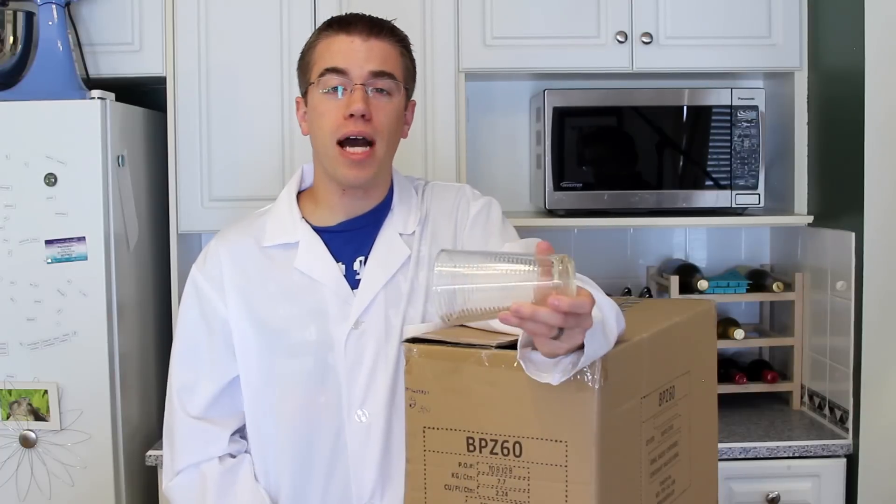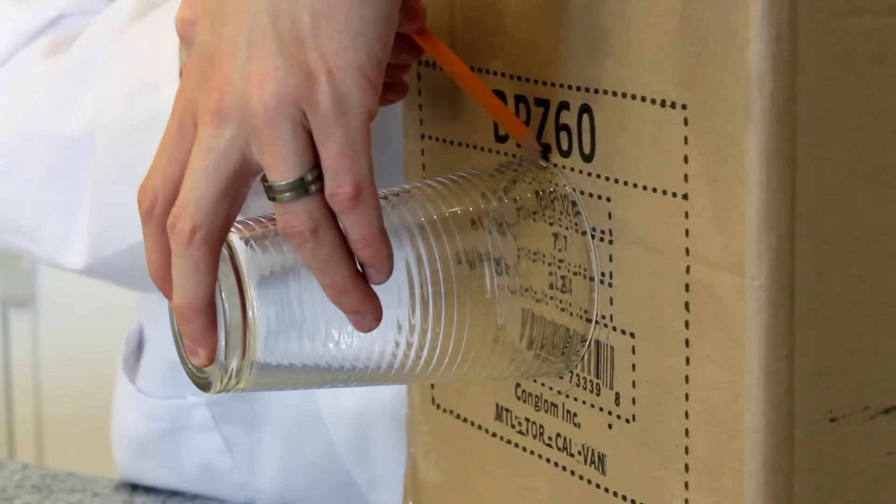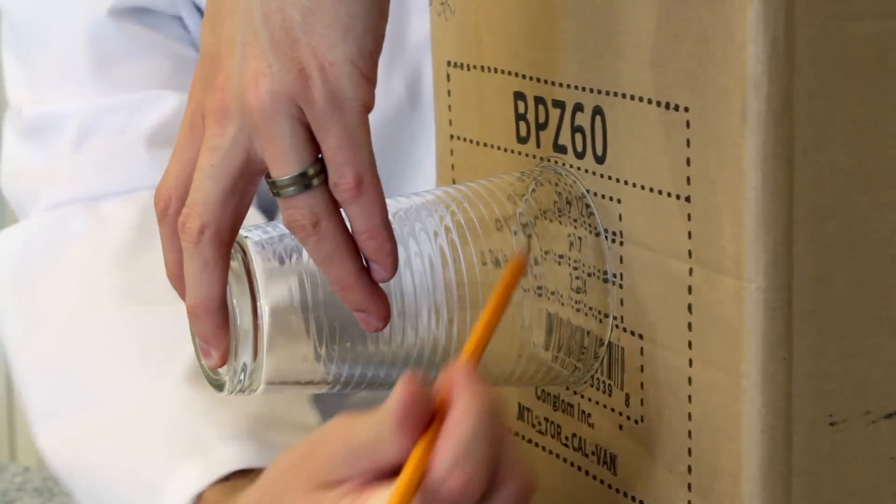The first step in our experiment is to take your glass and your pencil and use them to make an outline of where we're going to cut our hole. Place your glass in the middle of your box and outline the glass with your pencil.